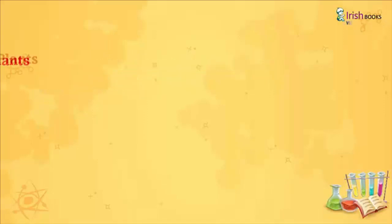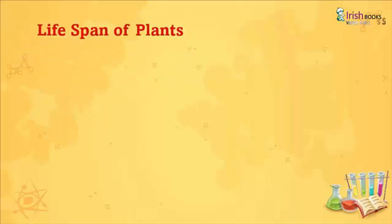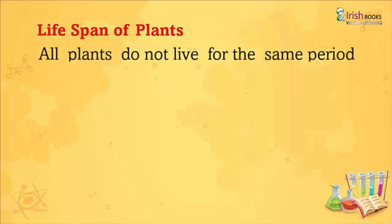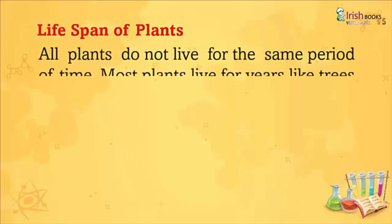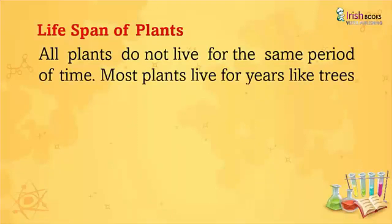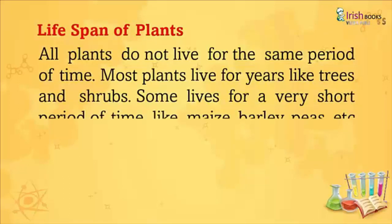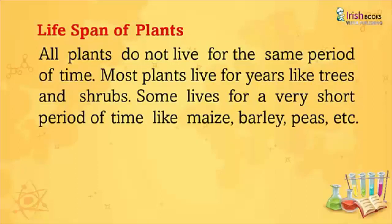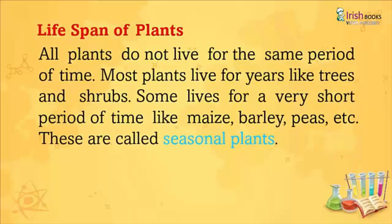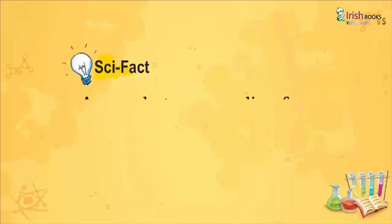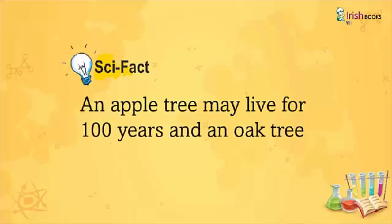Life Span of Plants: All plants do not live for the same period of time. Most plants live for many years, like trees and shrubs. Some live for a very short period of time, like maize, barley and peas. These are called seasonal plants. Science fact: An apple tree may live for 100 years and an oak tree for 1000 years.